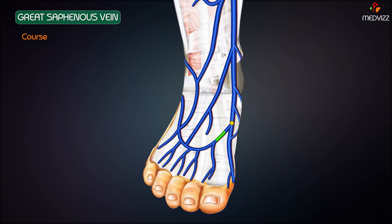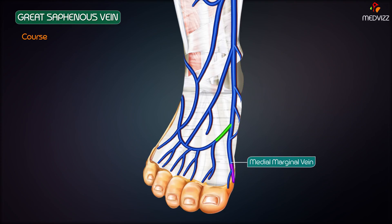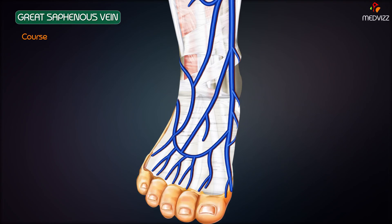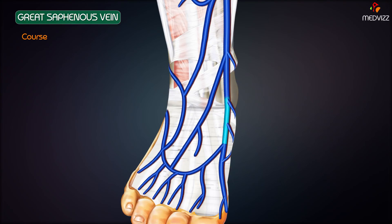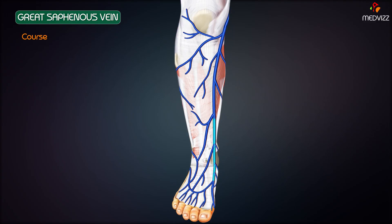The Great Saphenous Vein is formed on the dorsum of the foot by the union of the dorsal venous arch of the foot as well as the medial marginal vein of the foot. The vein runs upwards approximately 2.5 cm in front of the medial malleolus, where it crosses obliquely the medial surface of the lower third of the tibia, and then ascends just behind the medial border of the tibia to reach the knee.